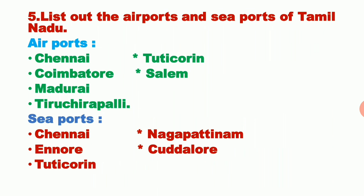Next question: list out the airports and seaports of Tamil Nadu. Tamil Nadu has many airports. Among them, the biggest international airports are Chennai, Coimbatore, Madurai, and Tiruchirappalli. The domestic airports are Tuticorin and Salem.